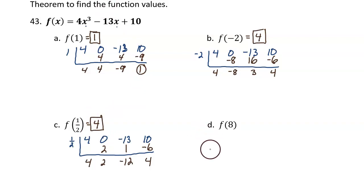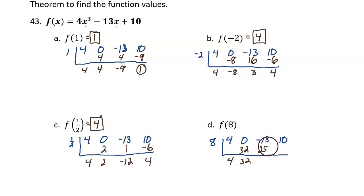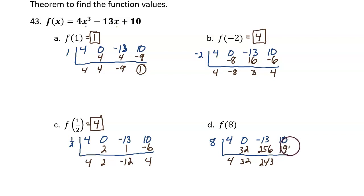Now question D. Coefficients: 4, 0, negative 13, and 10. Dividing in an 8. Bring down the 4: this makes 32, and this is 32. 32 times 8 is 256; add: 243. 243 times 8 is 1944; add: 1954. This is our remainder, so f of 8 equals 1954.